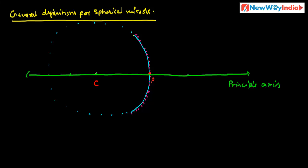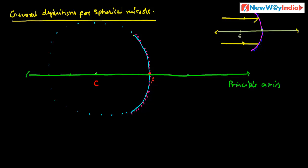Next is the principal focus. Consider a spherical mirror with pole P and principal axis. A beam of light parallel to the principal axis falls on this mirror. After reflection, it meets at some point on the principal axis. This point is called the principal focus, denoted by F.